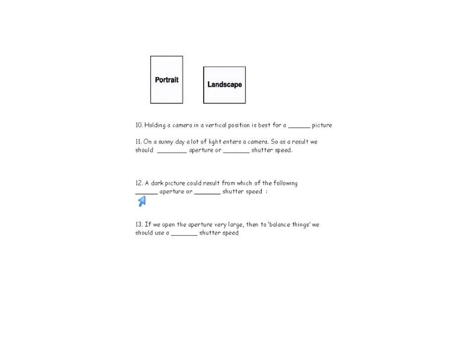A dark picture would result from a small aperture. On a sunny day you use a small aperture because there's already a lot of brightness, but if there's not much light you want to increase the aperture — make a large hole so all available light can come through. In a dark room, you also want a slow shutter speed to give the camera as much time as possible to gather light.